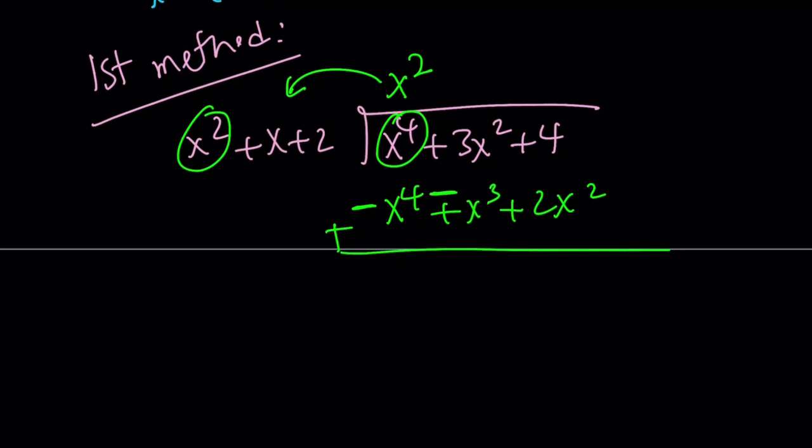So we're going to negate the second one. This is going to be a negative sign. This is going to be a negative sign. And this is going to be a negative sign. x to the 4 is going to cancel out. We're going to have negative x cubed. And 3x squared minus 2x squared is just going to be positive x squared. And now we're just going to bring down the 4. Make sense? Okay. Now, what are we going to do next?